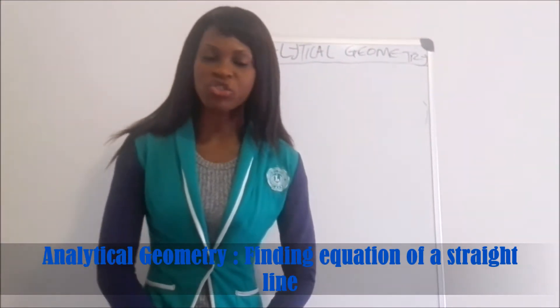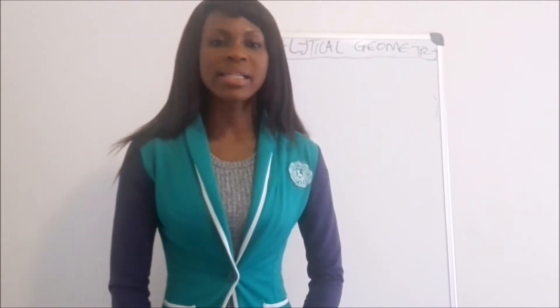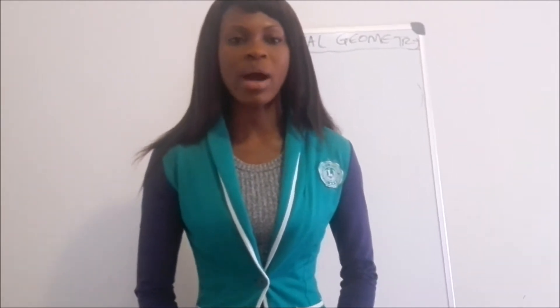To find an equation of a straight line we have a standard equation which is y = mx + c, and another equation which is y − y₁ = m(x − x₁). From both equations we have m, which is the gradient of a line. To find the gradient we have the formula m = (y₂ − y₁) / (x₂ − x₁), where those are the coordinates of the two points on a straight line.